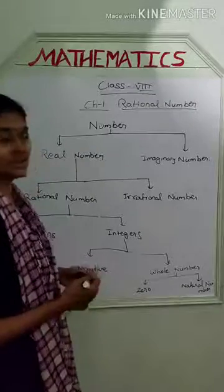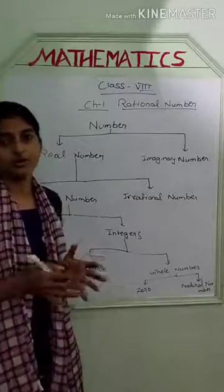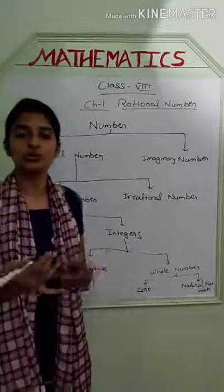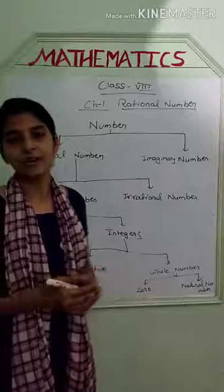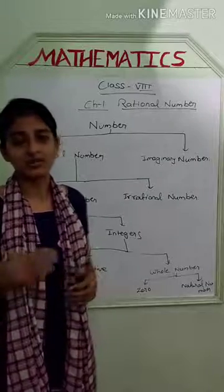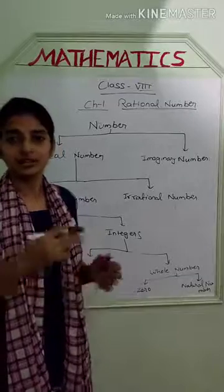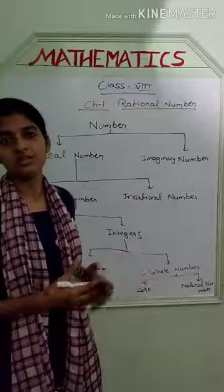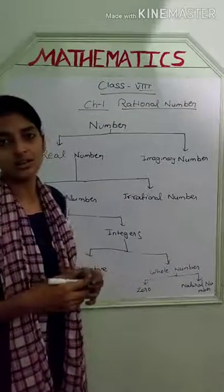Now, let us first understand what a number is. You have already studied that numbers are 1, 2, 3, 4, and so on. In this chapter and previous classes, you will see different types of numbers. We need to understand what a rational number is and what is related to rational numbers.